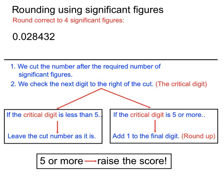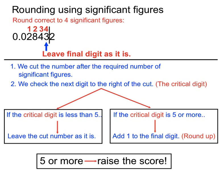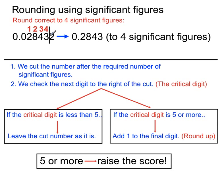This time we're asked to round 0.028432 to a total of four significant figures. We don't start counting significant figures until we hit the first non-zero digit, so working from left to right, our first significant figure is the two. Then we have the second, third, fourth — and we want to chop it after four significant figures. Our critical digit here is the two, but that critical digit is less than five, so we leave the cut number as it is: 0.02843. We leave that final digit as a three instead of adding one to it, leaving us with four significant figures.